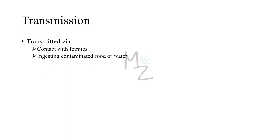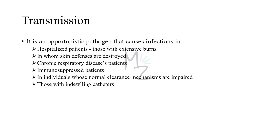Transmission: Pseudomonas aeruginosa is transmitted via contact with fomites and by ingesting it in contaminated food or water. It is primarily an opportunistic pathogen causing infections in hospitalized patients, those with extensive burns, lowered skin defenses, chronic respiratory diseases like cystic fibrosis, immunosuppressed patients, those with impaired clearance mechanisms, and patients with indwelling catheters. It is the most common cause of ventilator-associated pneumonia, also called nosocomial pneumonia.